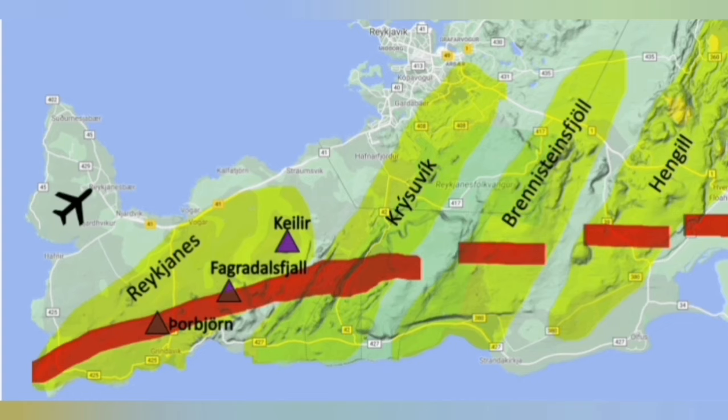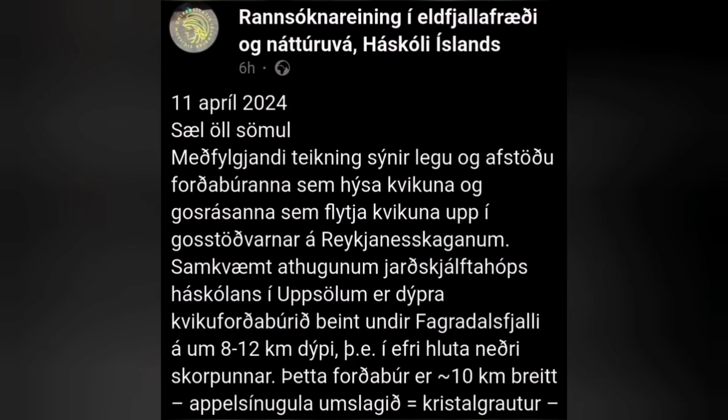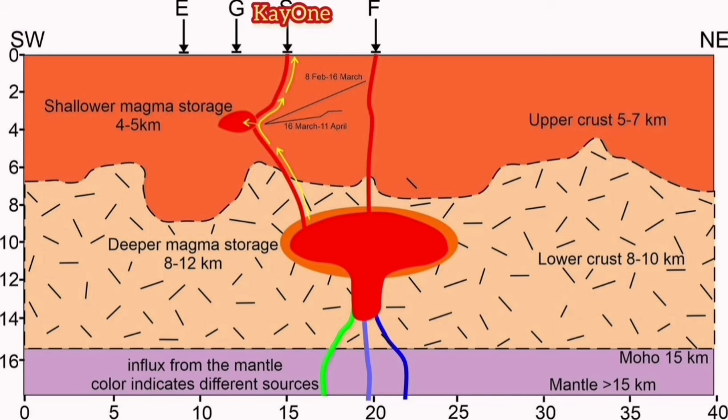The source of the magma in the Fagradalsfjall was deeper than what we thought, but not as deep as 15 kilometers, which is the thickness of the lithosphere in the Reykjanes Peninsula. The new study shows that this was not actually at the depth of 15 kilometers; the source is within the Earth's crust around 12 kilometers deep, which feeds the Sundhnúkur magma storage that's shallower at the depth of 4 to 5 kilometers.